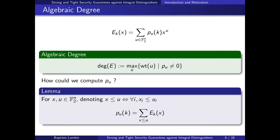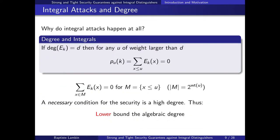The lemma states that we can compute the polynomial p_u by summing over all x ≤ u, where ≤ for vectors means all coordinates are component-wise less than or equal. This sum gives p_u, and this is very close to what we want for integral attacks. If we can show the algebraic degree of a block cipher is d, then for any u of weight larger than d, the key polynomial p_u will be zero. If p_u equals zero, the sum over all x ≤ u of the resulting ciphertext equals zero — exactly what we need for an integral attack.